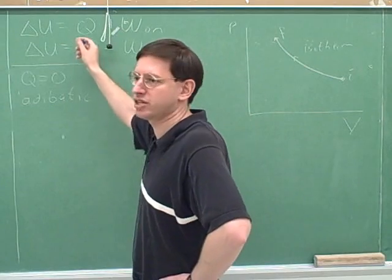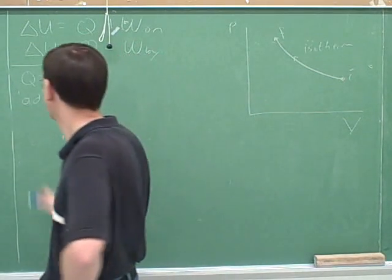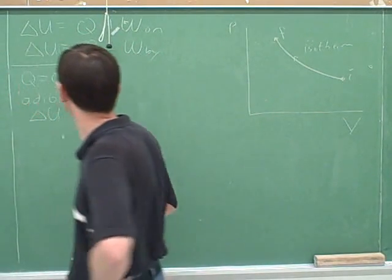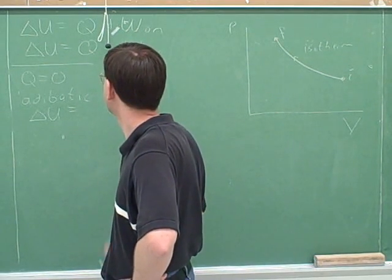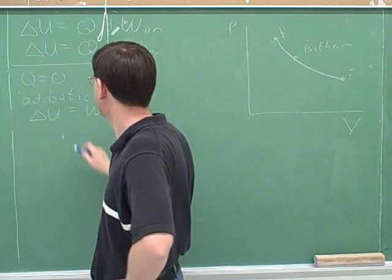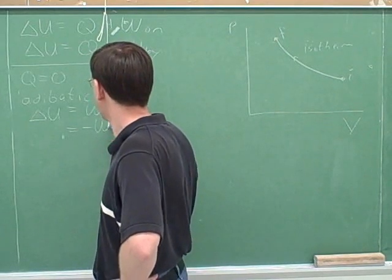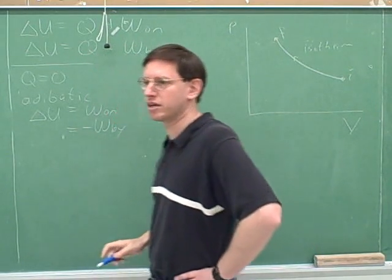Well, what's going to happen to our equation then in this case? Delta U equals... We'll work on delta U equals negative W. Okay, good.